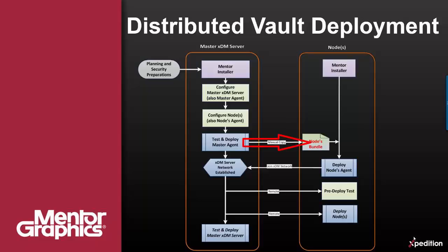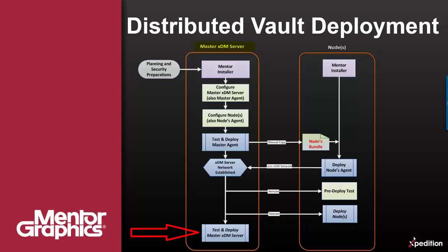Manually copy each node bundle to the appropriate node and deploy the agent on each node. This will establish an XDM server network, which will enable communication between the master XDM server and all the nodes for additional configuration and deployment actions, as well as diagnostics. Once you have the XDM server network established, you can conduct all utilities-based operations from the master host machine. For example, you can remotely test the configuration of all the nodes, and if the results are positive, you can start the deployment of the nodes and eventually the master XDM server.